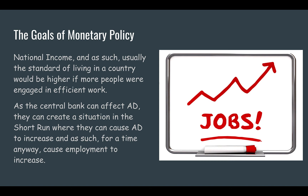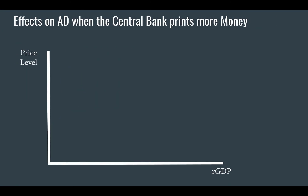National income and standard of living would be higher if more people were engaged in efficient work. As the central bank can affect aggregate demand by changing the money supply — which changes interest rates, which changes aggregate demand — it can create a situation in the short run where it causes aggregate demand to increase and, for a time, cause employment to increase and unemployment to fall.